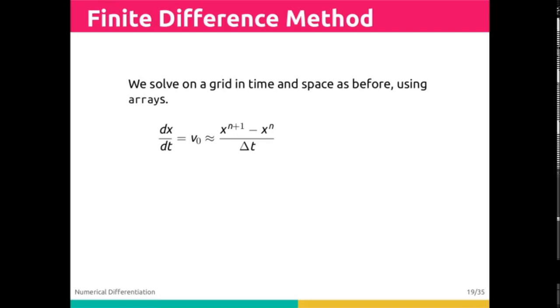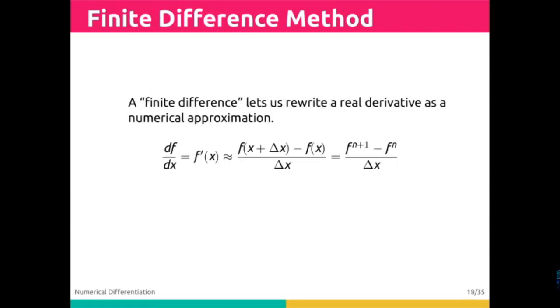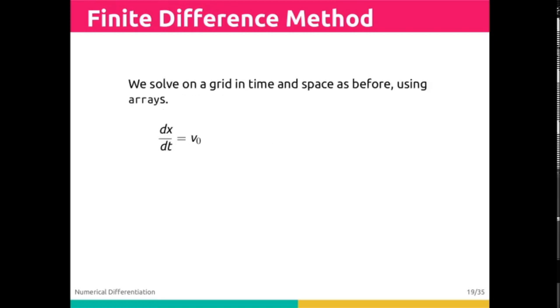But we can approximate this, even if it's changing over time, as x n plus 1 minus x n over delta t. Previously we were looking at a difference in f as a function of x. Now we're looking at x as a function of t. Keep that in mind, because sometimes x and y are going to be our independent variables, sometimes t is going to be our independent variable.